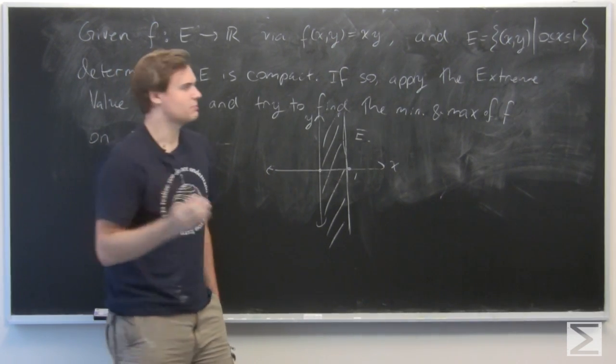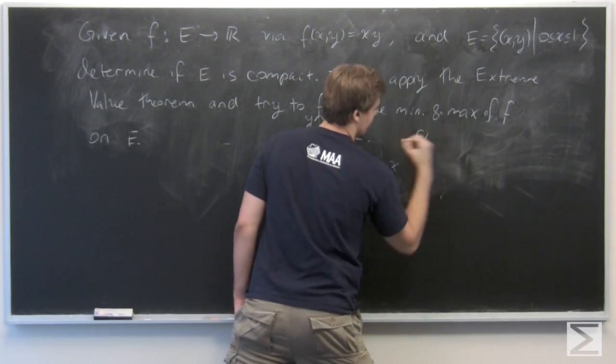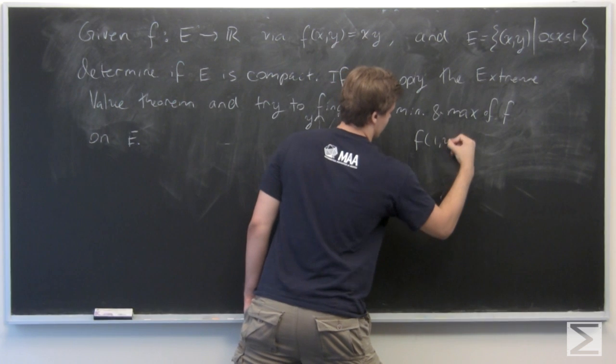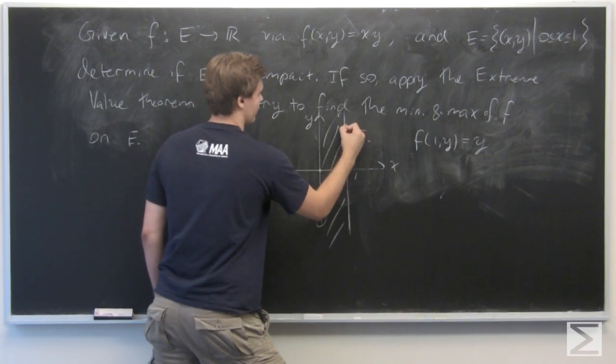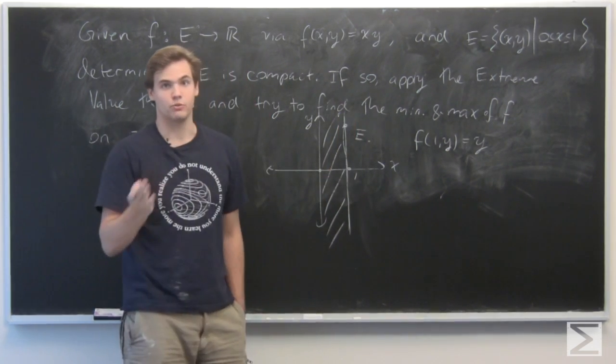In particular, you can see this by just plugging in, say, f(1,y), which is just going to be y. That is, you take some point on this boundary here, and that can be as big as you want on E, so it's unbounded.